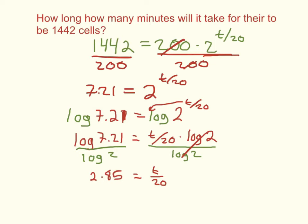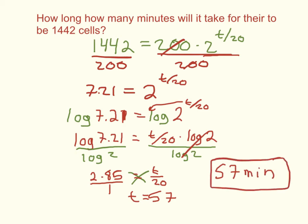To get rid of this 20, think of 2.85 as being over 1, making this a proportion we can cross multiply. So t equals 2.85 times 20, which equals 57. Since t represents time in minutes, it will take 57 minutes to reach 1,442 cells.